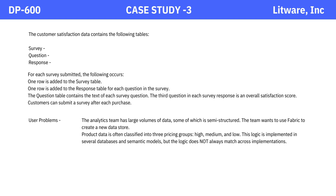User problems: The analytics team has large volumes of data, some of which is semi-structured. The team wants to use Fabric to create a new data store. Product data is often classified into three pricing groups — high, medium, and low. This logic is implemented in several databases and semantic models, but the logic does not always match across implementations.